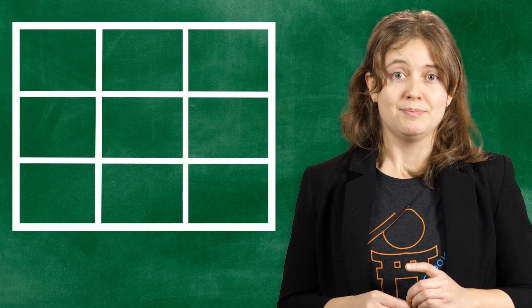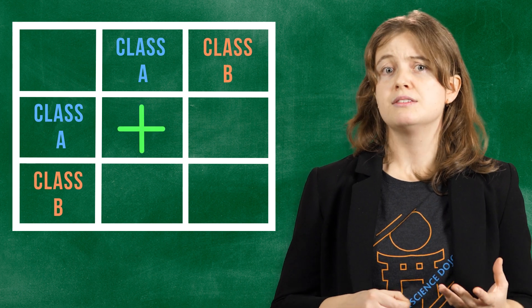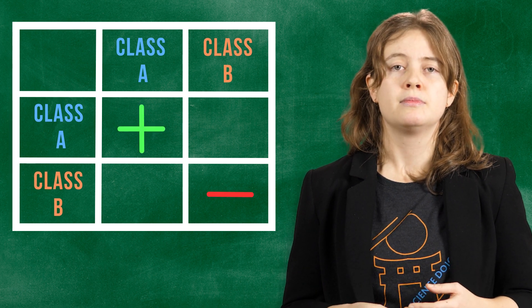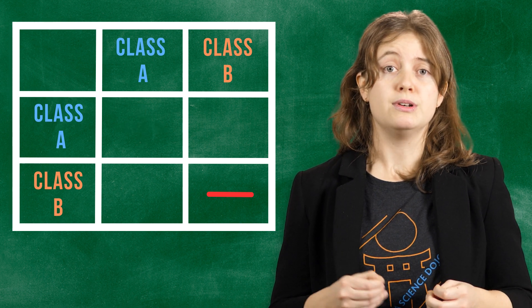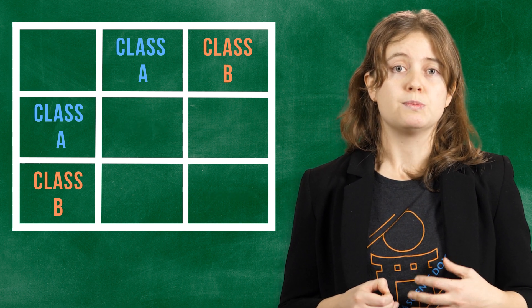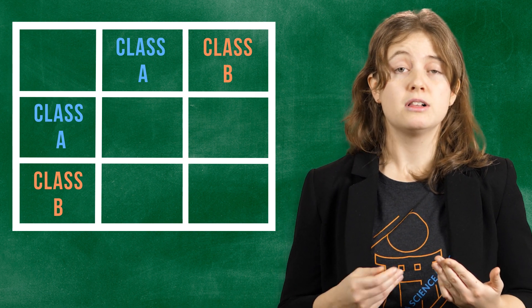One last thing, how do we decide what is class A and what is class B? What should be the positive class and what should be the negative class? Well, most of the time it doesn't matter which class you assign to positive or negative as the confusion matrix will tell you how many subjects were correctly predicted from each class.